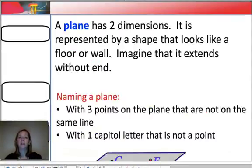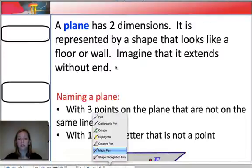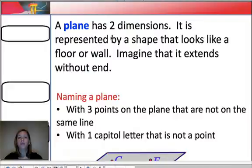Okay, the last of the three undefined terms is a plane. And we say that a plane has two dimensions. The two dimensions that a plane has, think about what they might be. It's like a flat surface. So it might have length and width, but it doesn't have any thickness or height.